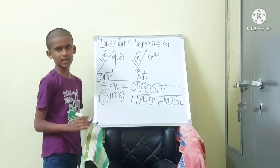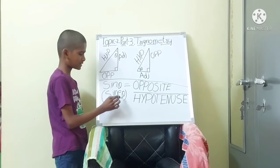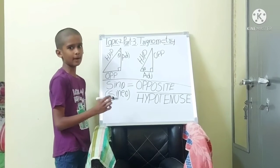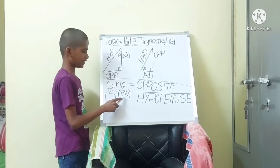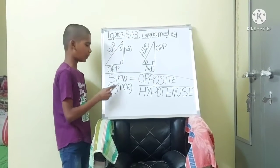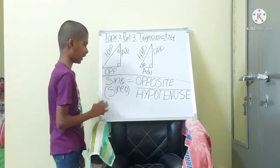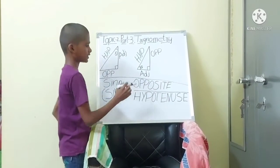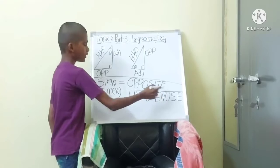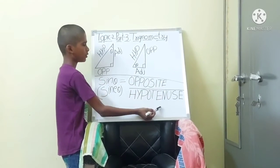Now we will see about sin theta. The full form of sin theta is sine theta — spelled S-I-N-E — but the short form is sin, spelled S-I-N. The formula of sin theta equals opposite side divided by hypotenuse.